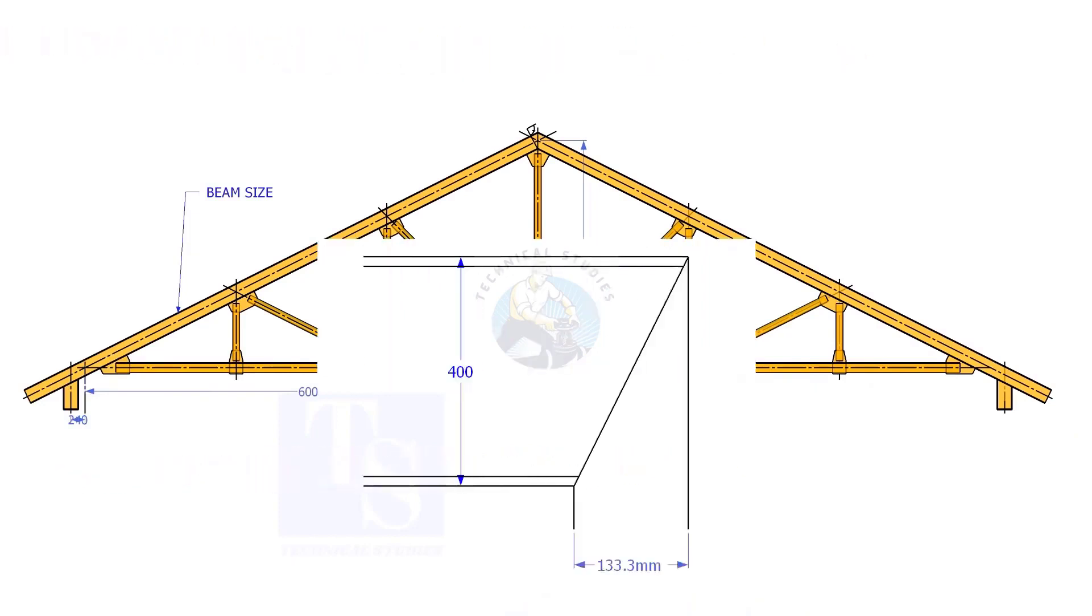Proportionate to the span and the height, the cutback for a 400mm wide beam is 133.3mm.